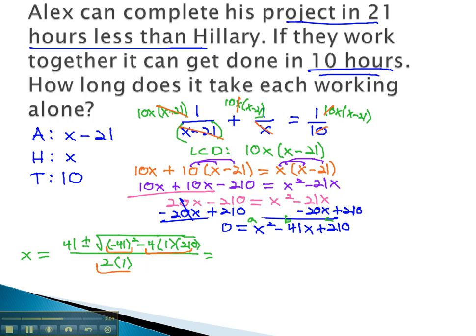Doing the multiplication first and the exponent, we get 41 plus or minus the square root of 41 squared, which is 1681, minus 4 times 1 times 210, which is 840, all over 2.